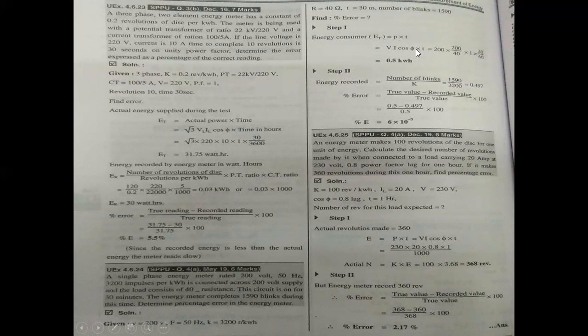Energy consumption = V × I × cos φ × t = 200 × (200/40) × 1 × (30/60) = 0.5 kilowatt hour. Energy recorded = number of blinks / K = 1590 / 3200 = 0.497 kilowatt hours. Percentage error = (true energy − recorded energy) / true energy × 100. The percentage error is 6 × 10⁻³, approximately 0.6%.